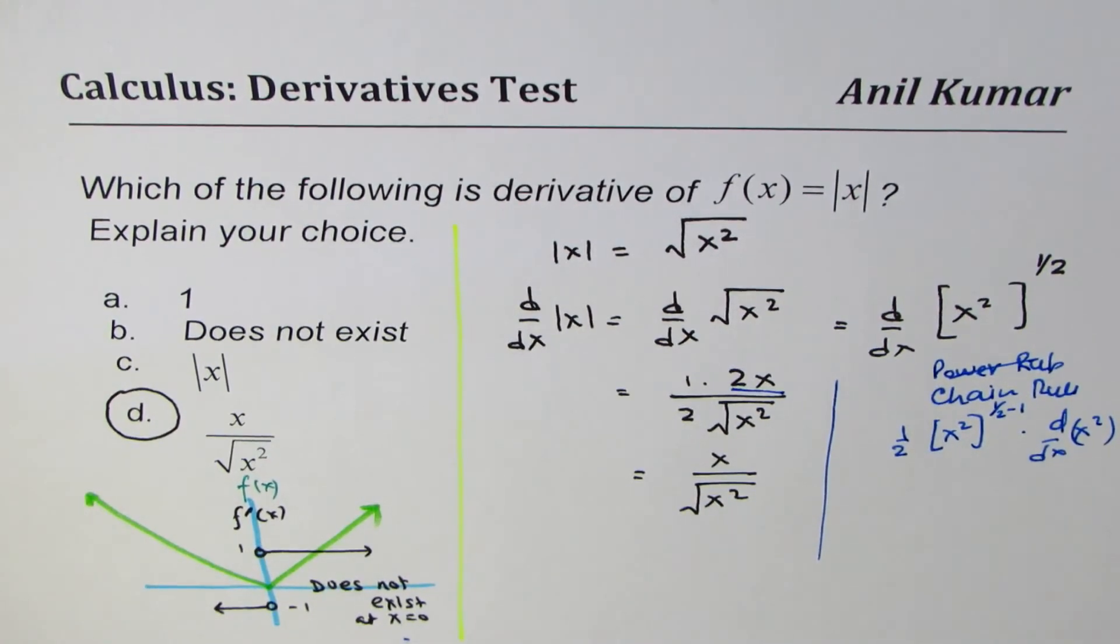So, I hope you understand and appreciate how algebraically we can find derivative of absolute x and it could be written as x over square root of x squared.